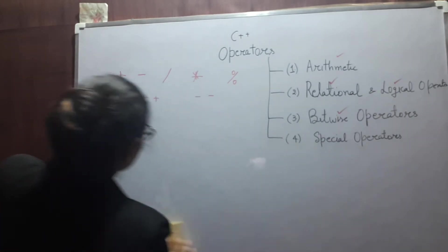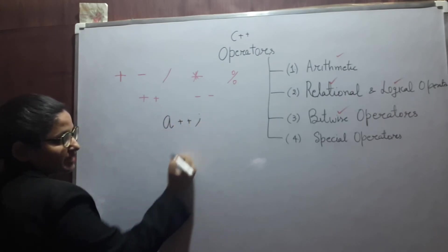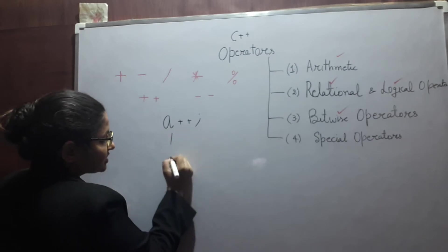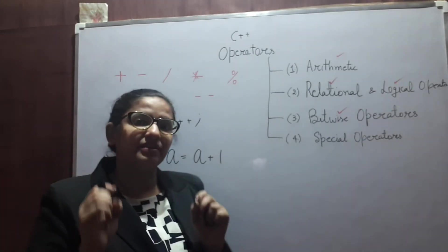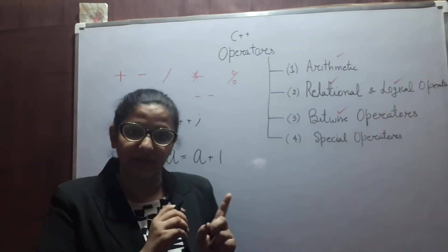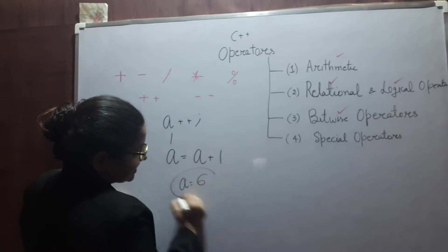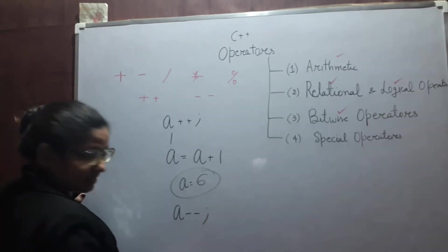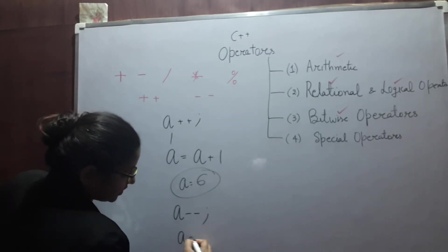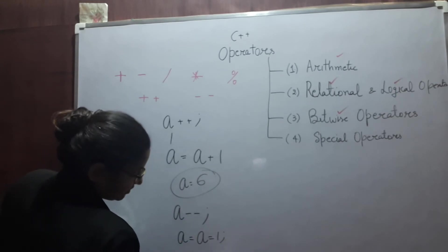The plus-plus operator is known as the increment operator. The statement A++ is equivalent to A equals A plus one. The increment operator increments the value of its operand by one. So if A's value was five, A will become six. If the statement is A--, then A equals A minus one, so A's value will become six minus one, which equals five.